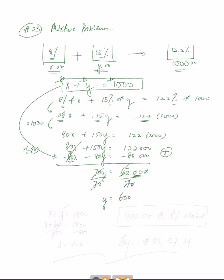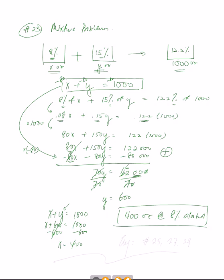Using x plus y equals 1,000 and substituting y equals 600 gives x plus 600 equals 1,000, so x equals 400. Make sure you answer the question. Reading carefully, the question only asks how many ounces of the 8% solution are required, so the answer is 400 ounces at 8% alcohol. Try similar problems: numbers 25, 27, and 29.